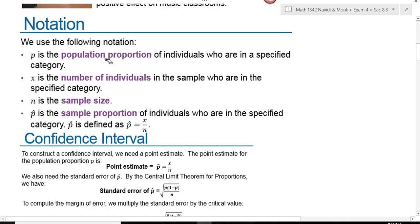The notation that we use: P is the population proportion. X is the number of individuals in the sample who are in the specified category, our successes. N is our sample size and P-hat is the sample proportion, the number of successes divided by the number of people that you survey.